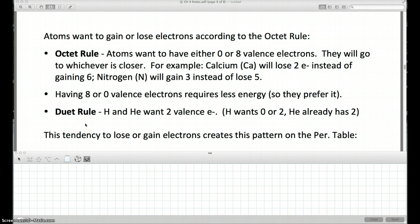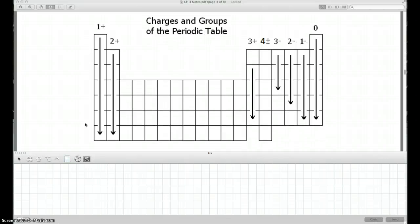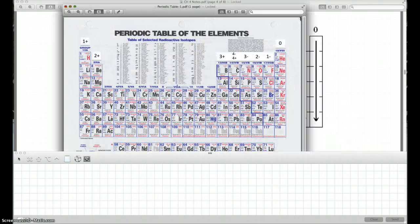Now this tendency to gain or lose electrons forms a pattern on the periodic table. If you look at your periodic table you got from me as a handout, you'll see that I wrote this pattern along the top of it. It doesn't look quite as fancy as this, but I hand wrote in the charges above the columns along the periodic table.